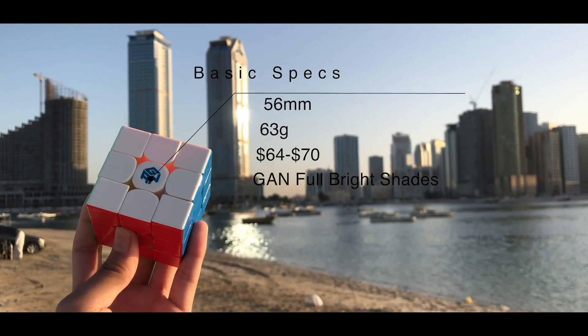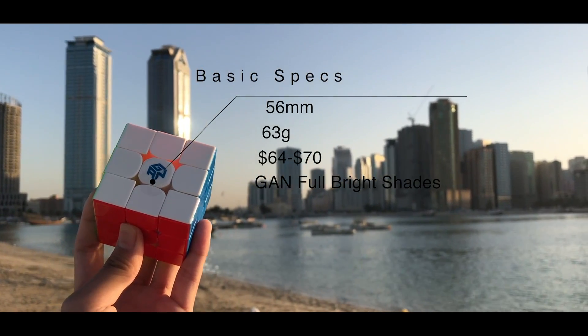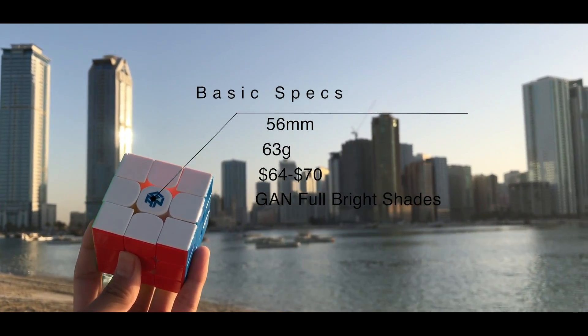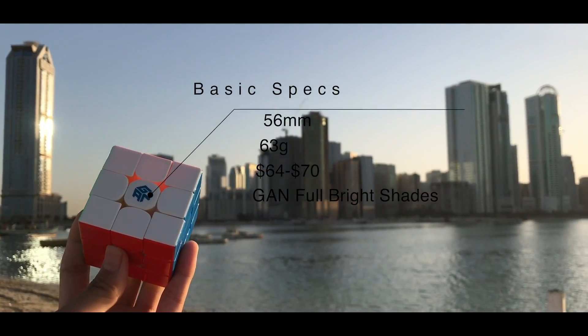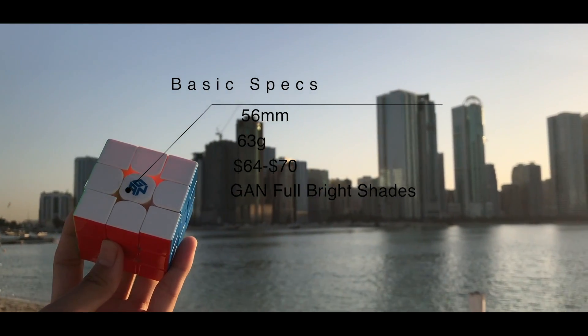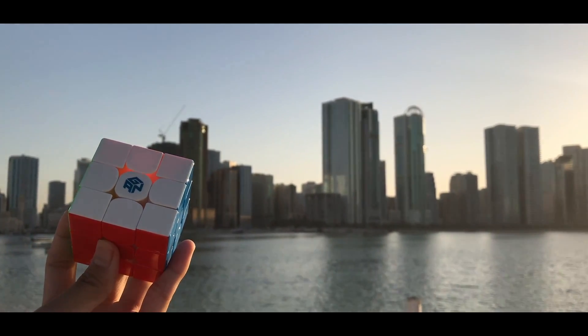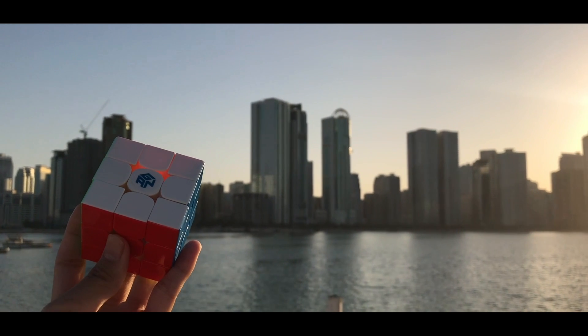The basic specs of the Cube: this Cube is 56mm which is a standard size for a 3x3. This Cube weighs about 63g which is extremely light. And if this isn't light to you, I don't know what is.